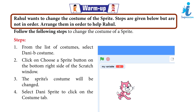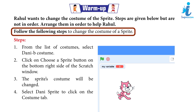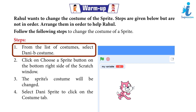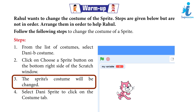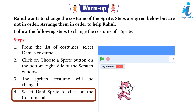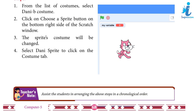Warm-up: Rahul wants to change the costume of the sprite. Steps are given below but are not in order — arrange them in order. Steps: one, from the list of costumes select Danny B costume; two, click on Choose a Sprite button on the bottom right side of the Scratch window; three, the sprite's costume will be changed; four, select Danny sprite; five, click on the Costume tab. Teachers note: assist the student in arranging the above steps in chronological order.